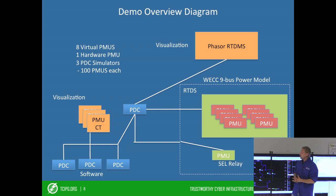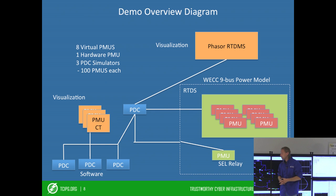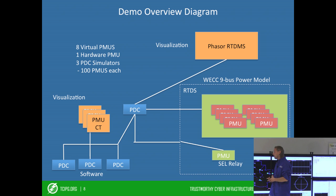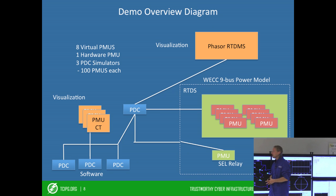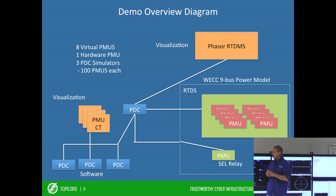What you see here is an example of the type of experiment that we perform here in the lab. These experiments include real physical hardware, simulated hardware, and real and simulated software systems.